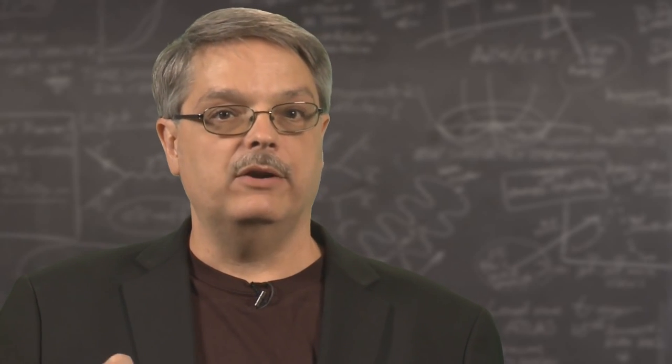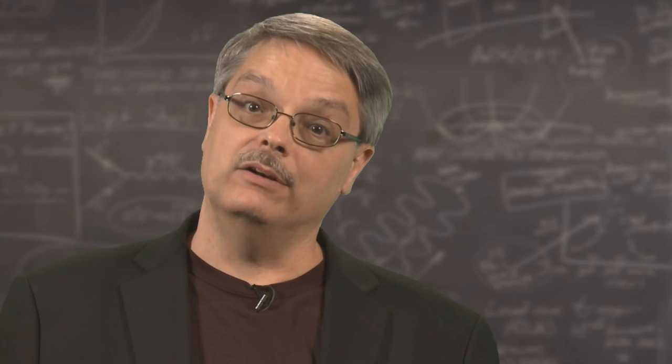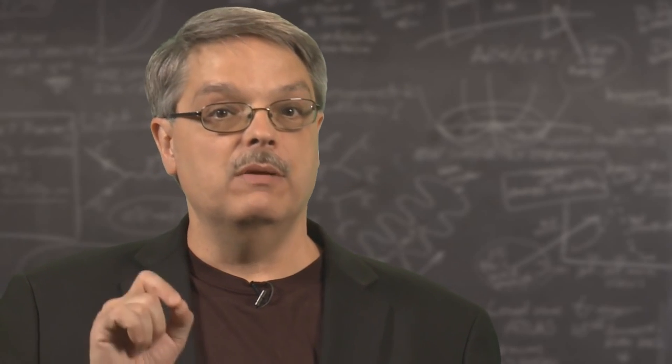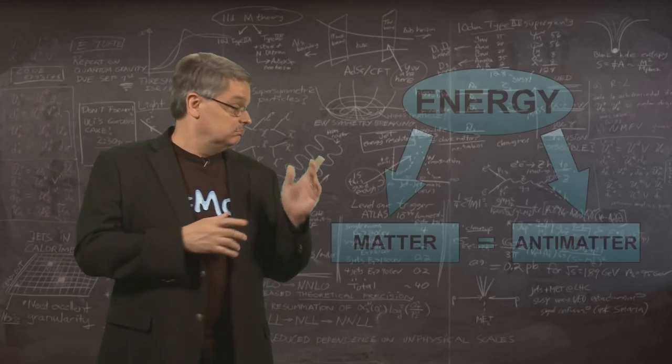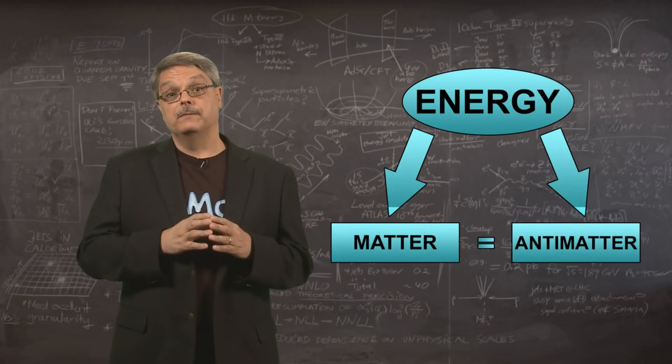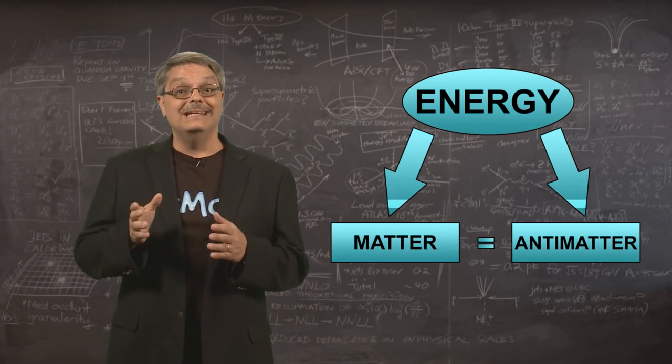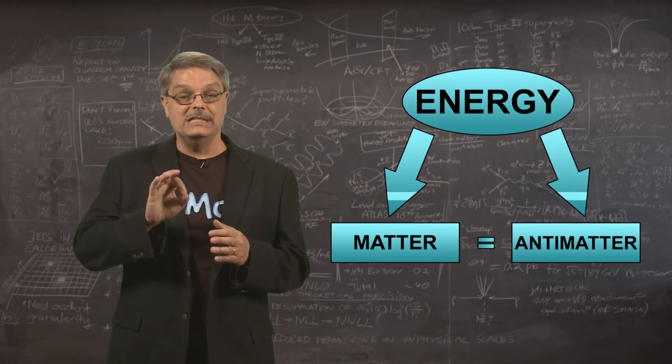When energy converts to matter, it also converts into antimatter at the same time, and not some random amount of antimatter. The amount of matter created and the amount of antimatter created are identical. This graphic drives the point home. Energy can turn into matter and antimatter, and the amount of matter and antimatter is equal.